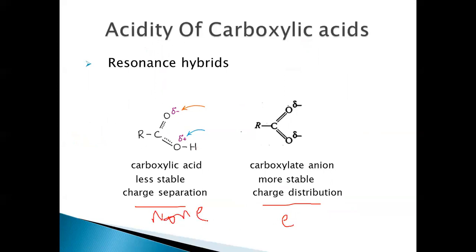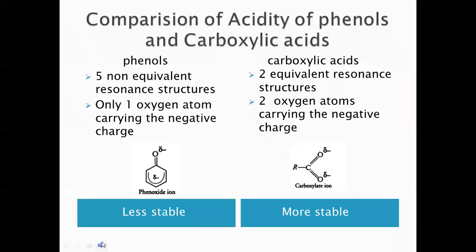The carboxylate anion is more stable than carboxylic acid, so the equilibrium shifts to the right side. The acid can donate protons easily, the carboxylate ion is formed easily, and so carboxylic acid acts as an acid. We can also compare the acidity of phenols and carboxylic acid based on the mesomeric effect.